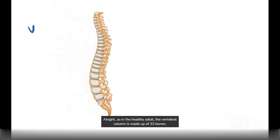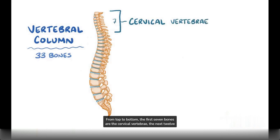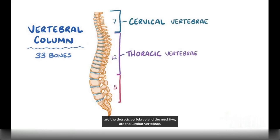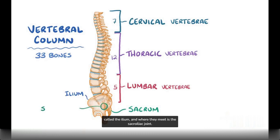In the healthy adult, the vertebral column is made up of 33 bones. From top to bottom, the first seven bones are the cervical vertebrae. The next 12 are the thoracic vertebrae, and the last five are the lumbar vertebrae. Below that is a bone called the sacrum, which is attached to the pelvic bone on either side called the ilium, and where they meet is the sacroiliac joint. Below the sacrum is a tiny bone called the coccyx, or tailbone.